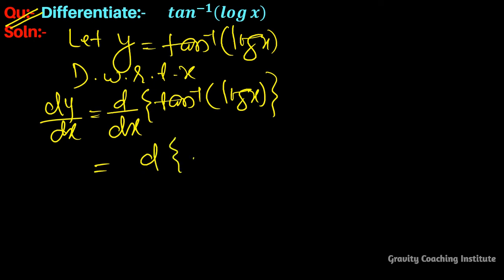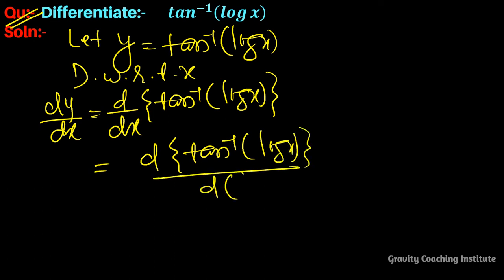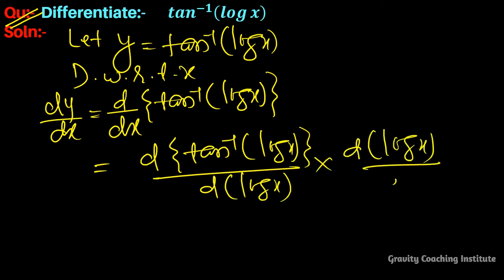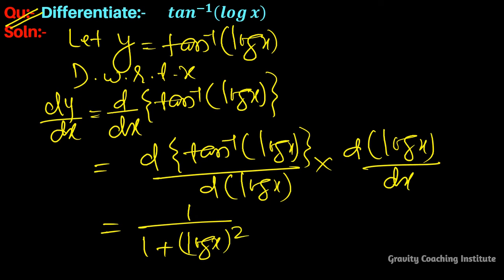Applying the chain rule according to the angle: differentiate tan inverse log x upon d log x, then multiply by d log x. So we get 1 upon 1 plus log x whole square, placing log x in the formula for tan inverse x, into the derivative of log x.